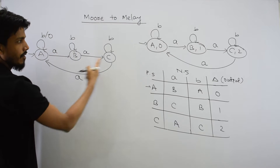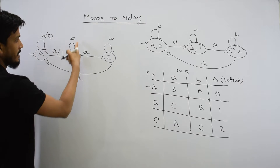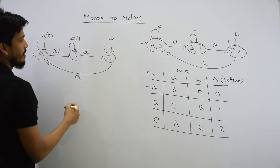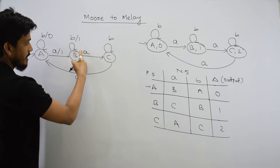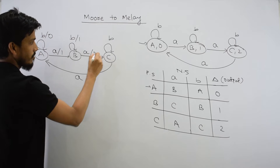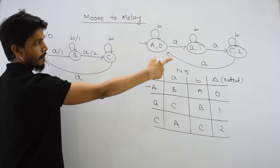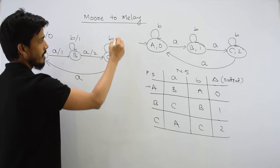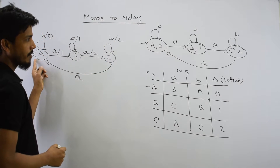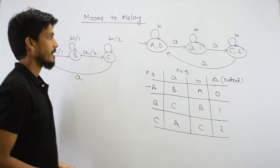That will be state B. The output of state B — you can see here, this is state B, its output is 1. So if from B we read input A, then C is the next state and output is 1. Next, from C to B — the output of C is 2. From C, reading input A, the output associated is 2.